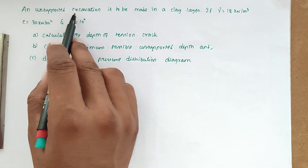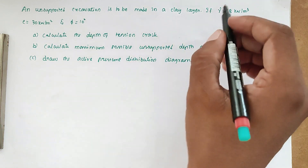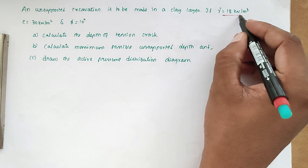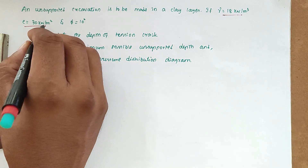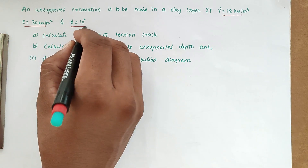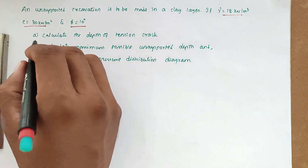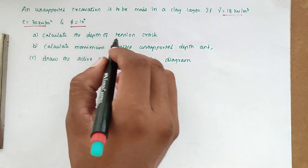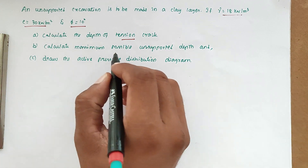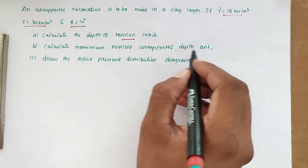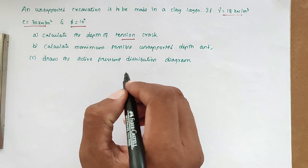The problem is: an unsupported excavation is to be made in a clay layer. Given gamma equal to 18 kilo Newton per meter cube, cohesion C equal to 30 kilo Newton per meter square, and angle of internal friction phi equal to 10 degrees. We have to calculate the depth of tension crack, then calculate the maximum possible unsupported depth, then draw the active pressure distribution diagram.